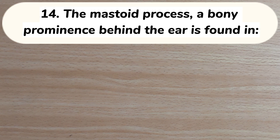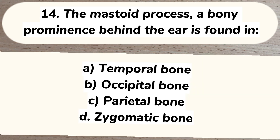Number 14. The mastoid process, a bony prominence behind the ear, is found in: A. Temporal bone, B. Occipital bone, C. Palatine bone, D. Zygomatic bone. Answer: A. Temporal bone.